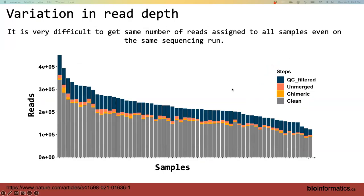Even with fecal samples, you can end up with two-, three-, or even ten-times differences in reads assigned to different samples. We try to put the same amount of DNA in, but that's another factor where it doesn't end up exactly the same. So you end up with very different read depths across samples.